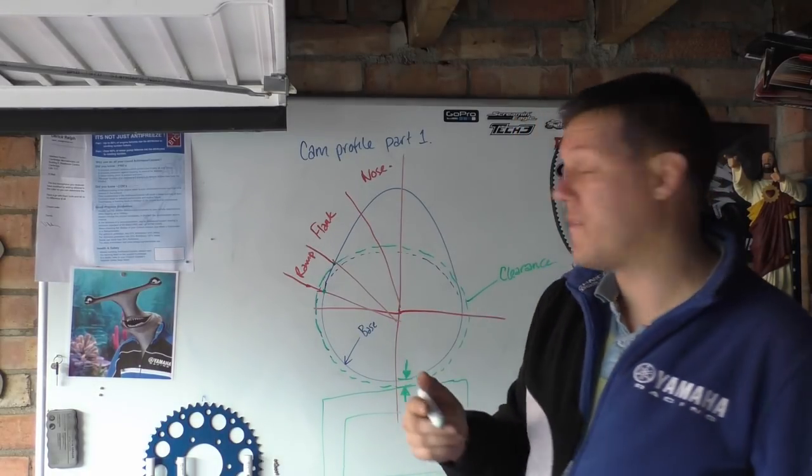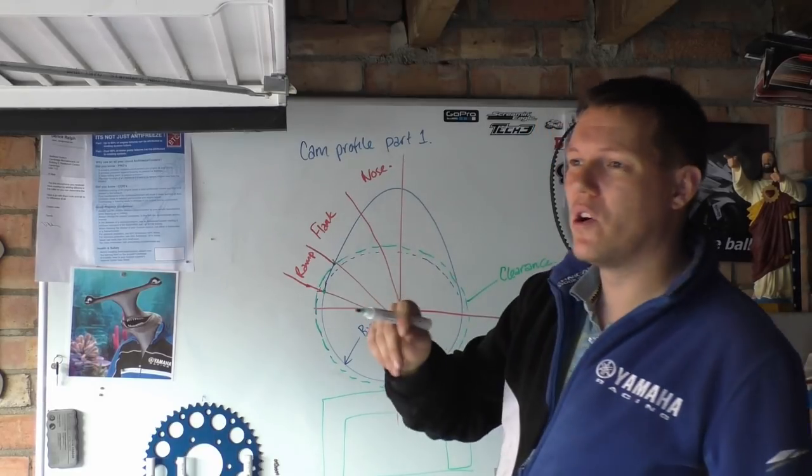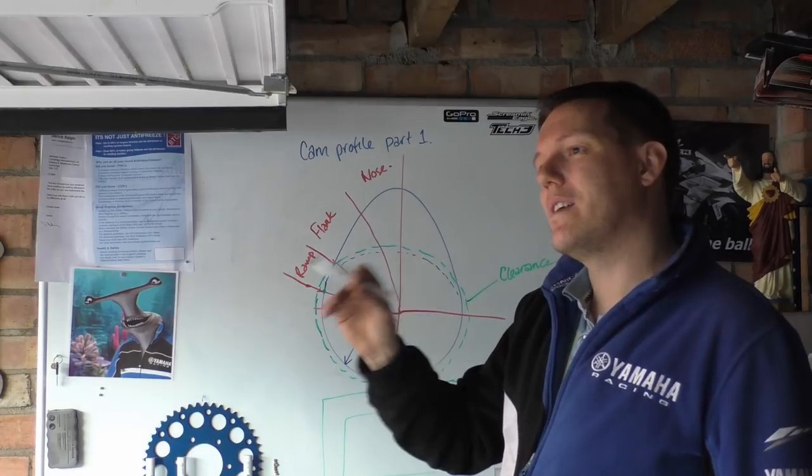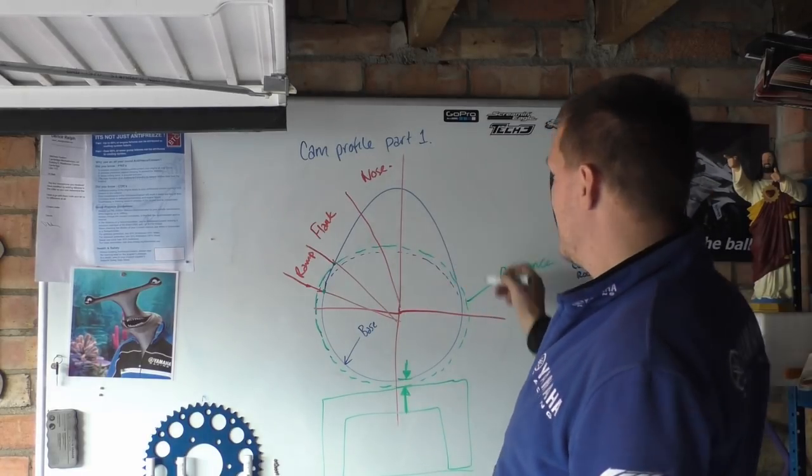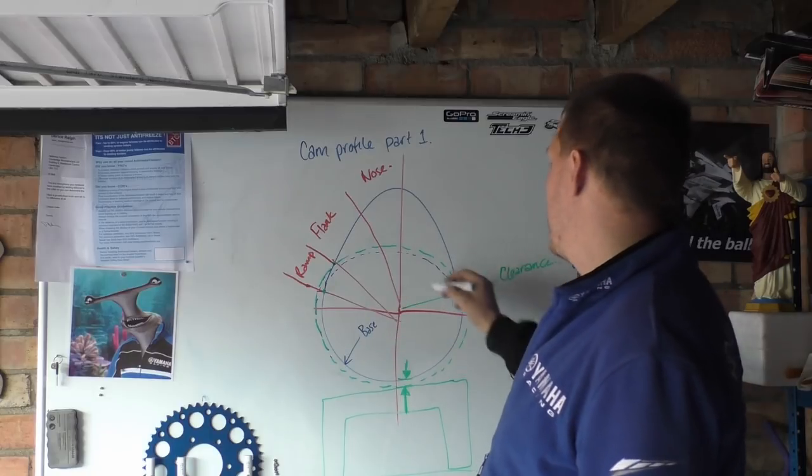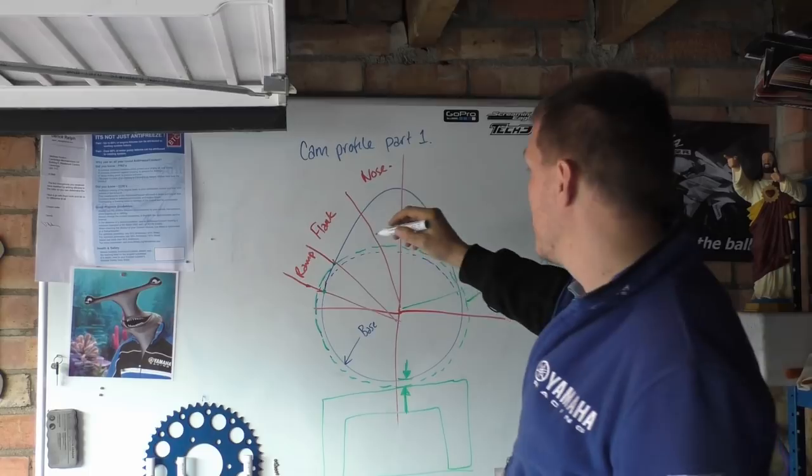Then you have our flank - our flank basically is just our rise up to our nose. Then our nose becomes more important with other cams, and we'll get to that later. Obviously this is symmetrical, so you'd have the same thing here with your ramp and your flank and your nose.